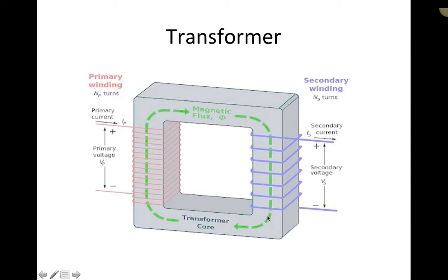The two coils are not connected together, but because of electromagnetic induction, a magnetic field oscillating in time from the primary passes through the secondary, and I can get voltage and current out on the other side.